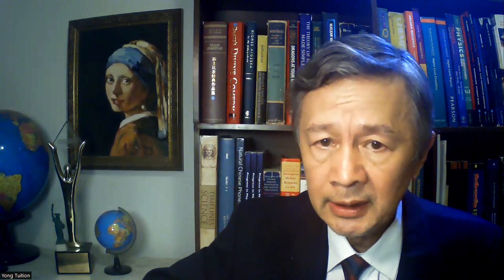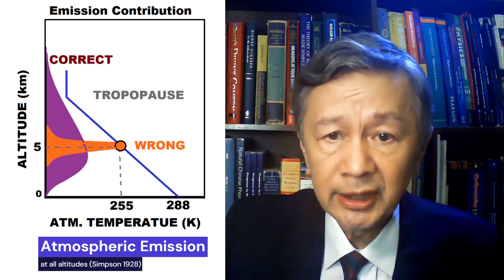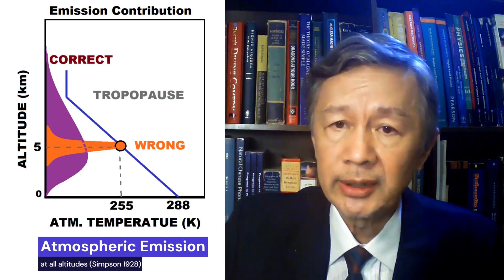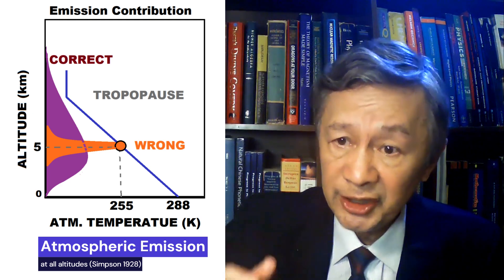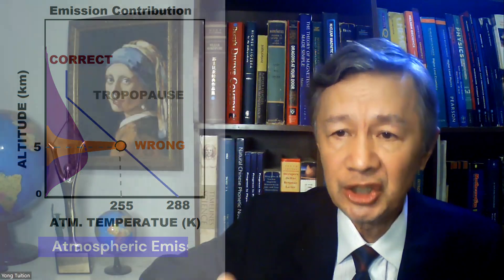In summary, it is wrong and misleading to assume the equivalent emission temperature of 255 Kelvin — derived from the required outgoing infrared radiation of the Earth — is the same as the atmospheric kinetic temperature at one altitude close to 5 km. In fact, outgoing radiation can be emitted from all layers, as originally described by George Simpson in 1928. Hence, the claim that CO2 doubling can elevate the so-called emission altitude is just a joke.